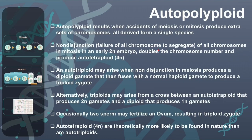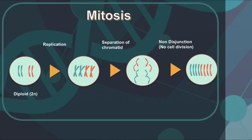Autopolyploidy results when accidents in mitosis or meiosis produce extra sets of chromosomes, all derived from a single species. There is no contribution from different species here. The origin is generally non-disjunction or failure of chromosomes to segregate. All chromosomes in mitosis in an early embryo are doubled, producing auto-tetraploid. This diagram clearly shows how the chromosome number is doubled.